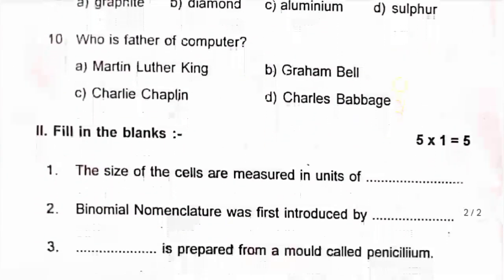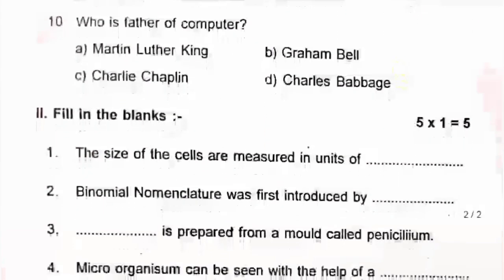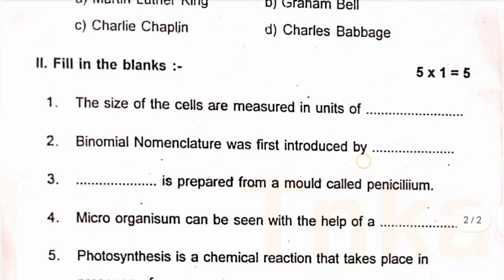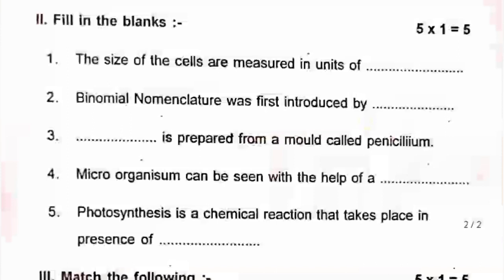Roman number 2: fill in the blanks. First: the size of the cells are measured in units of dash. Second: binomial nomenclature was first introduced by dash. Third: dash is prepared from a mold called penicillium. Number 4: microorganisms can be seen with the help of a dash. Number 5: photosynthesis is a chemical reaction that takes place in presence of dash.